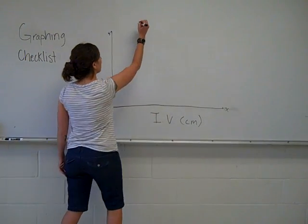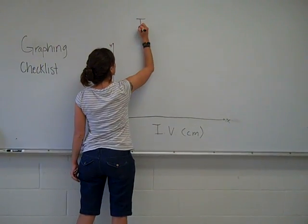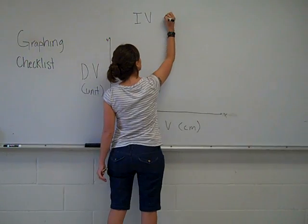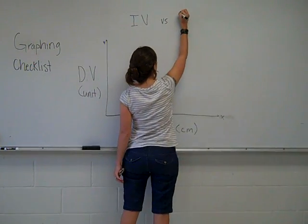The most elementary way to do this is to write whatever the independent variable is versus the dependent variable.